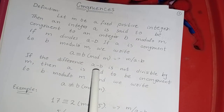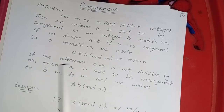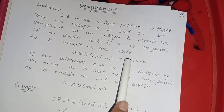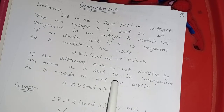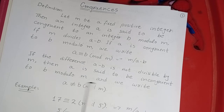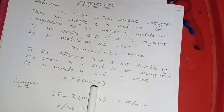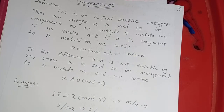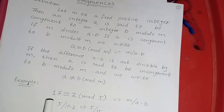If the difference A minus B is not divisible by M, then A is said to be incongruent to B modulo M, and we write A ≢ B (mod M). This is the definition of congruence.